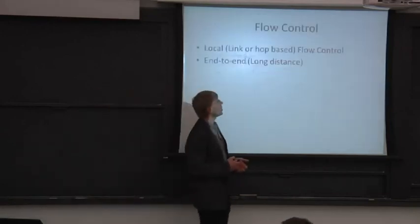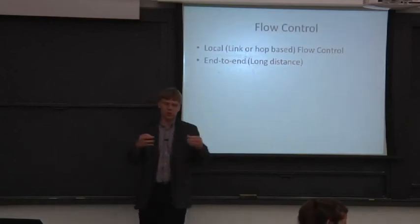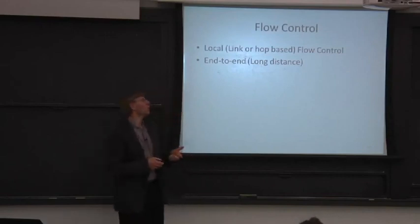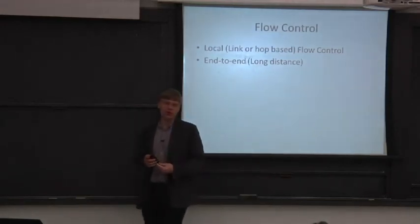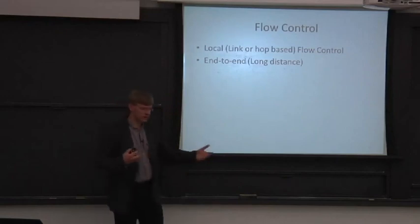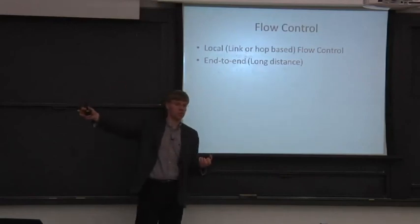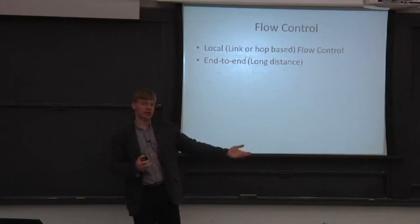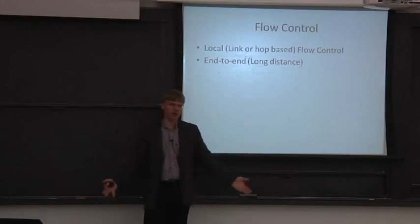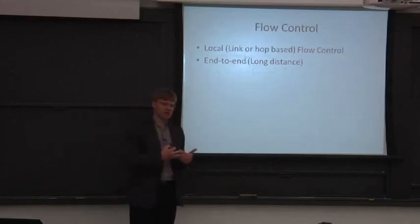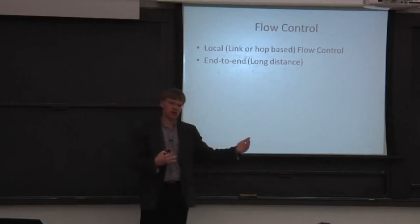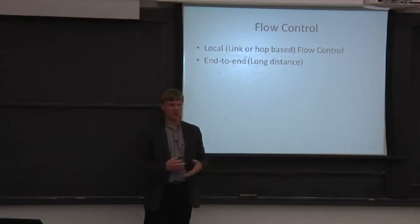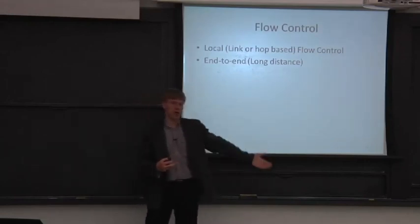So we left off last time. We were talking about flow control between two separate nodes in an interconnection network, and we talked about local link-based or hop-based flow control, which is what we spent the end of last class talking about. We also mentioned this end-to-end flow control, and end-to-end flow control is important. A good example of this is something where you have a core which is trying to communicate to a memory controller, and you don't want to overrun the buffer in the memory controller because if you overrun the buffer in the memory controller, your memory transactions just drop on the floor.